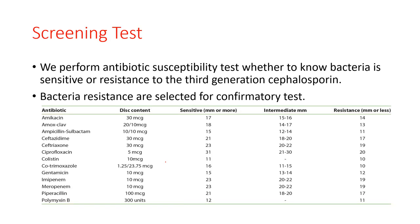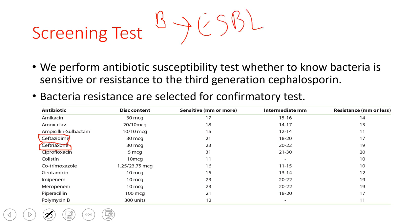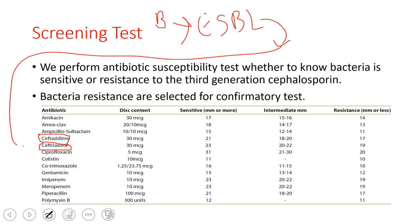First is the screening test, and then we will do the confirmatory test. The screening test is simply the antibiotic susceptibility test. If the third generation cephalosporin — like ceftriaxone — is not working, meaning the bacteria are resistant towards it, the bacteria may produce the ESBL enzymes. If the bacteria produce the ESBL enzyme, it breaks the beta-lactam ring and the antibiotic won't work. So the screening test is completed.